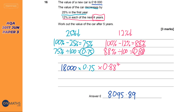A common mistake I see: students say 0.88 is the multiplier for one year, so they times it by 4. That is completely wrong. You never multiply by 4 like that with compound interest — it's always to the power of, because you're multiplying by 0.88 four times. If we were doing compound interest as an increase, the only thing that changes is the minus becomes a plus.